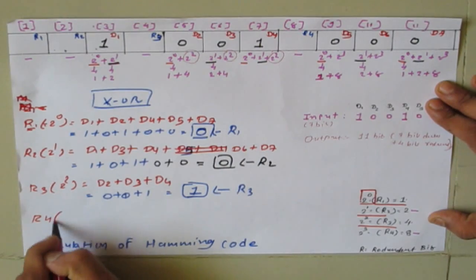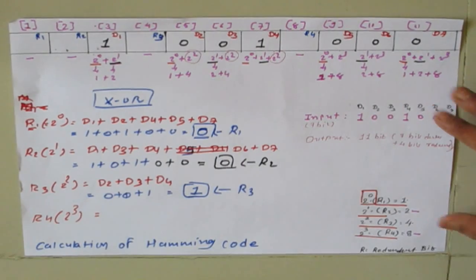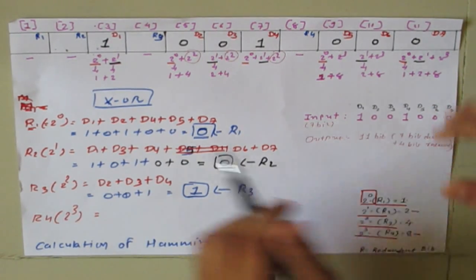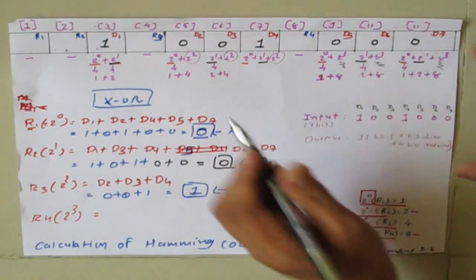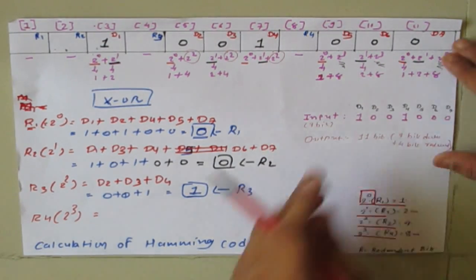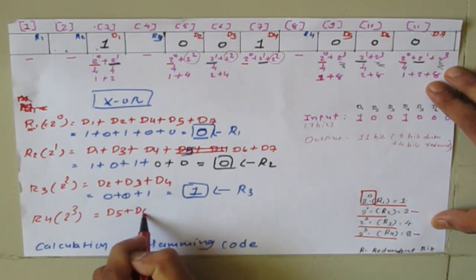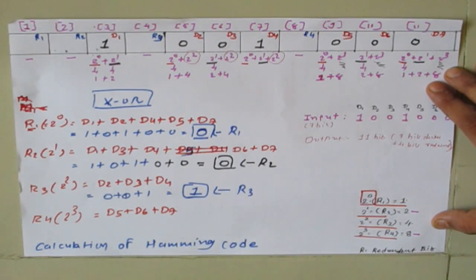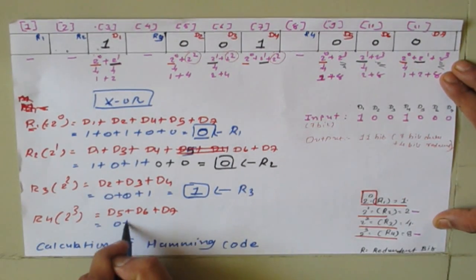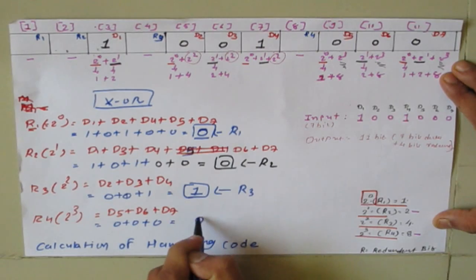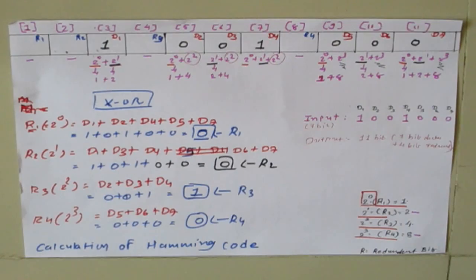Now calculate r4. r4 corresponds to 2 raised to 3. Find all positions where 2 raised to 3 is used — those are d5, d6, and d7. Using XOR: r4 equals d5 XOR d6 XOR d7 equals 0 XOR 0 XOR 0 equals 0. So the value of r4 is 0.